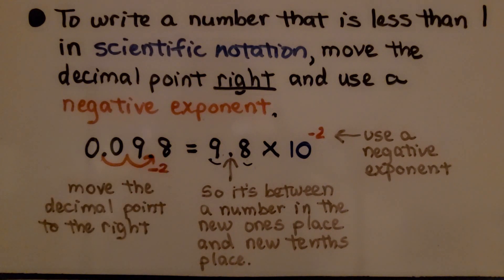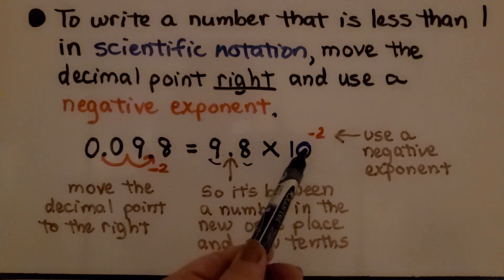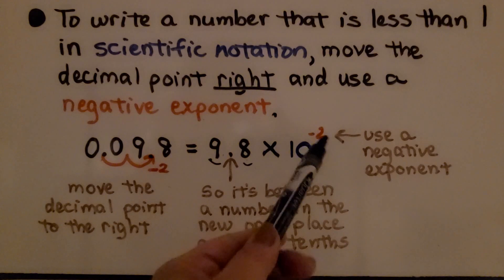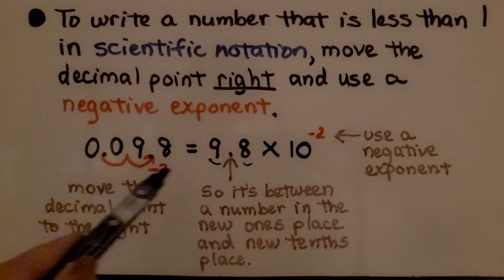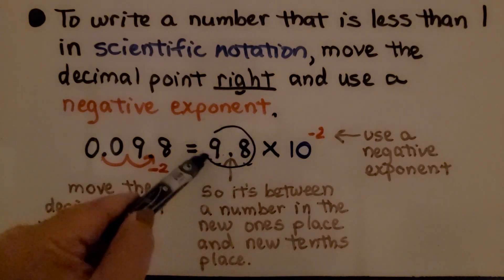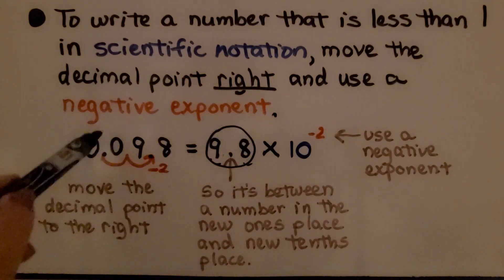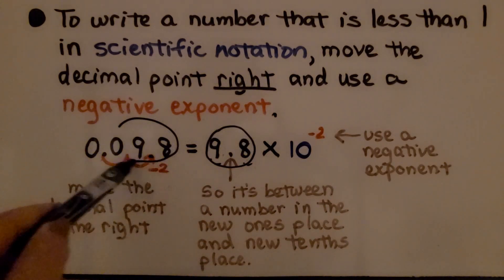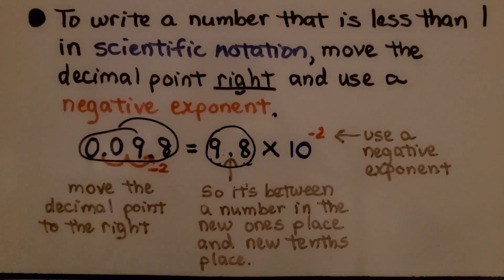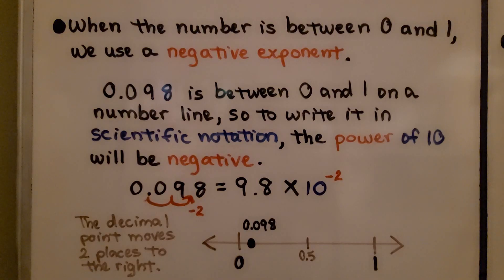We write it to a power of 10. That power is negative because this new number is larger than the original number. When the number is between 0 and 1, we use a negative exponent.